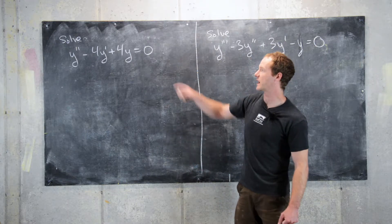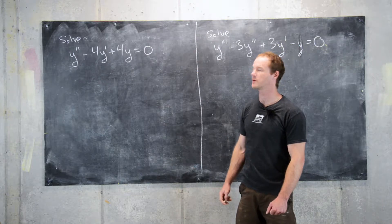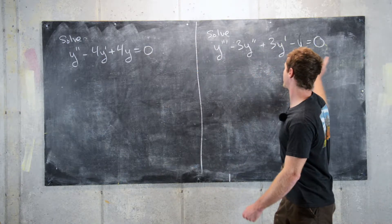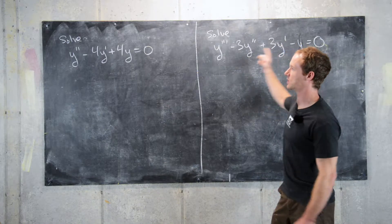So in this case, we have y double prime minus 4y prime plus 4y equals 0, and here we have a third order differential equation, which we'll also look at.